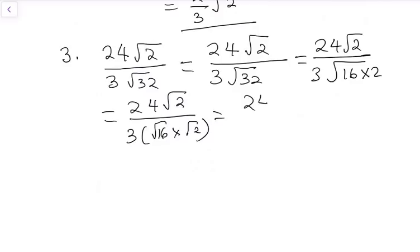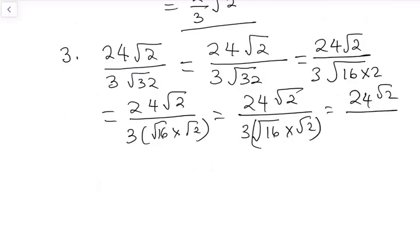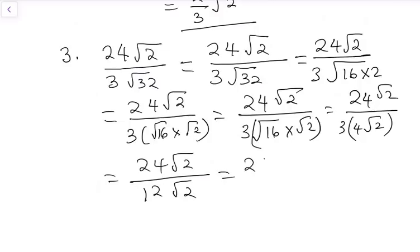That will be 24 root 2 over 3 root 16 times root 2. That will be 24 root 2 over 3. Square root of 16 is 4, and we have root 2. This will give us 24 root 2 over 3 times 4, which is 12 root 2.